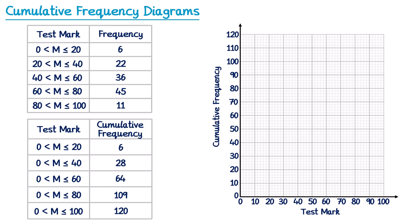Now we need to mark on some points for each entry in the cumulative frequency table. Looking at the first entry, from 0 to 20 it has a cumulative frequency of 6. We need to plot this in a very particular place — since this entry says that up to 20 marks we have 6 people, we plot at the end point of that interval. So at 20 we plot a cumulative frequency of 6. You always plot at the end point of each interval.